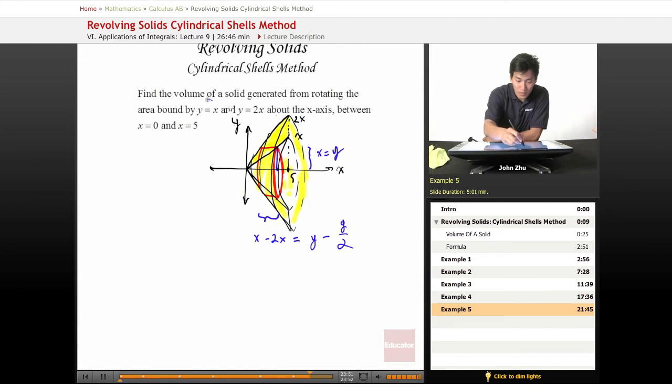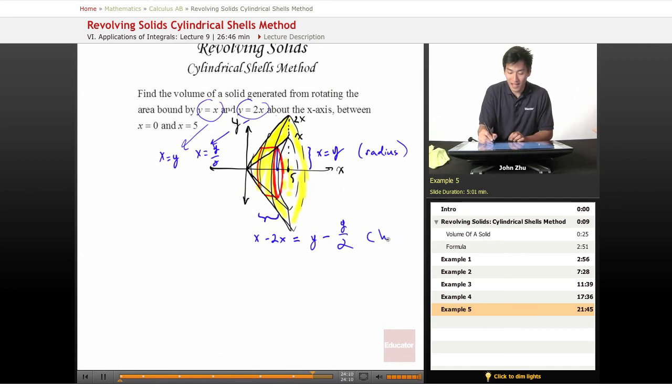So if we take these two equations and replace and flip the x and y terms around, we get x equals y over 2. All right, so now we have a radius and now we have a height.